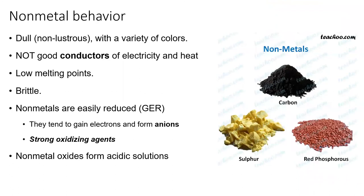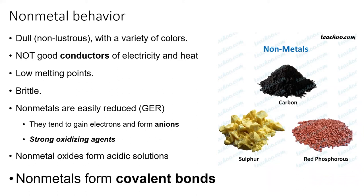Nonmetals, on the other hand, are pretty much the exact opposite of metals — anything the metals do, the nonmetals don't. They don't conduct heat or electricity well, they melt and boil very easily, and they are often brittle. Chemically, they tend to gain electrons, making them good oxidizing agents. In fact, oxidization was named after a special nonmetal that is particularly good at gaining electrons. Because nonmetals often share electrons, they have one special property that leads to an incredible variety of compounds: the covalent bond.